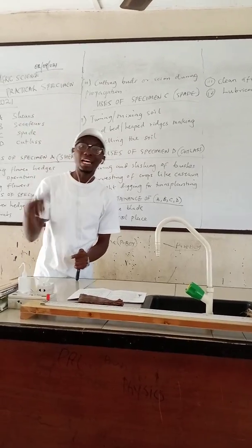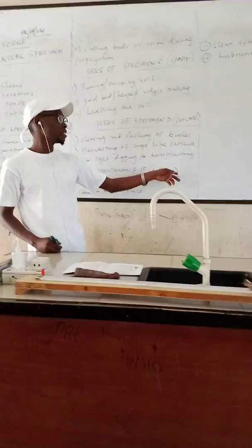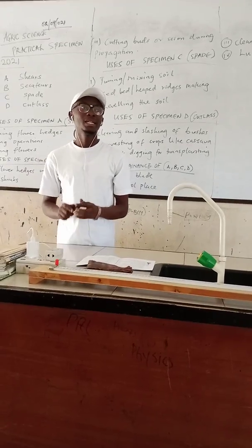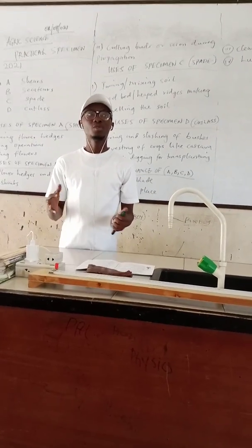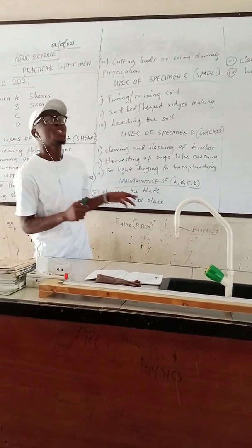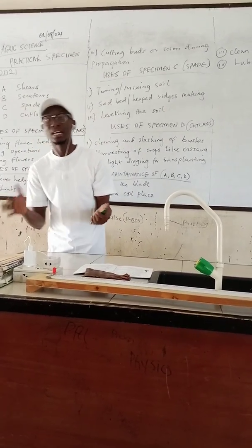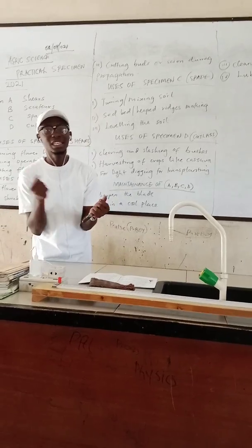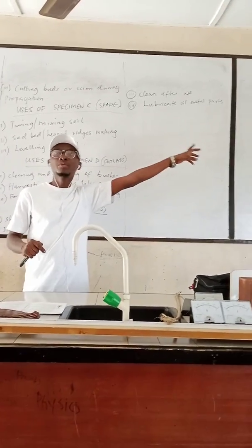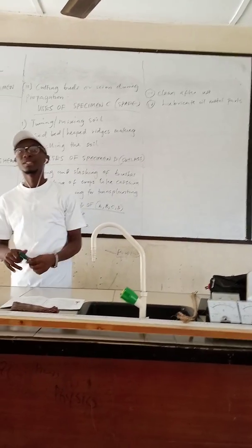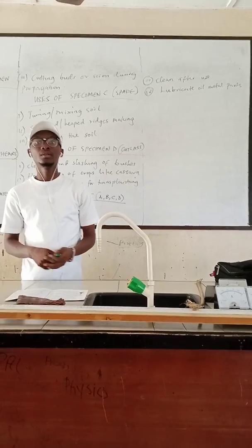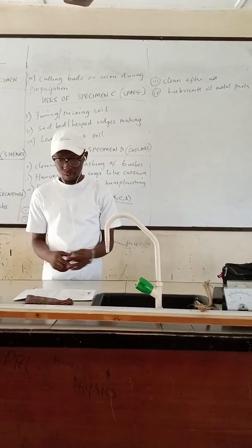We also need to know the maintenance of these farming implements A, B, C, and D. How do we maintain them? After using them, it is expected that you clean them properly so that they will not rust. Clean properly after using and sharpen the blade so that it remains sharp next time. You should also oil the metal parts so that they will not wear or tear, and to avoid the equipment from being worn out.